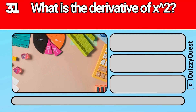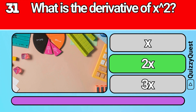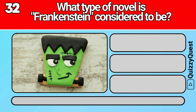What is the derivative of x²? What type of novel is Frankenstein considered to be?